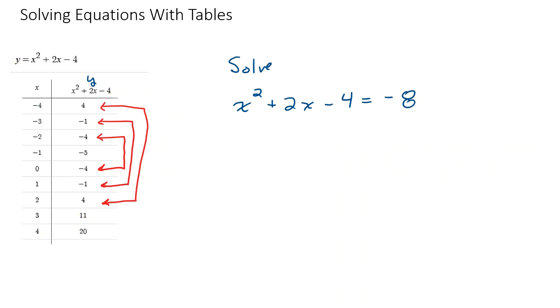Our equation is x squared plus 2x minus 4 equals negative 8. Use the table to solve that equation. If you need time to think about it, pause the video and restart it when you're ready to hear the solution. Okay, well we can see from the table we're looking at a pattern. I don't see a negative 8 in here. That's a problem.